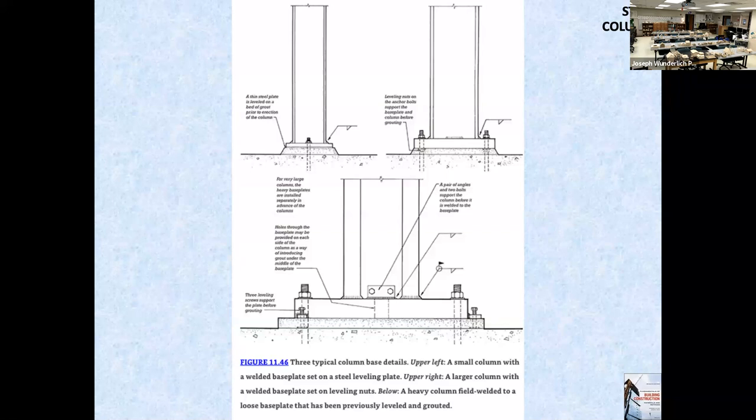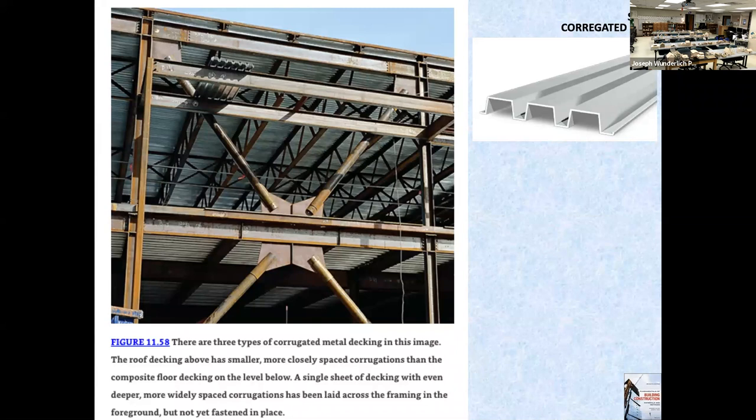This is how a column would fasten to a concrete floor. Here is corrugated deck — the picture on the left shows three different kinds, and one kind on the right.